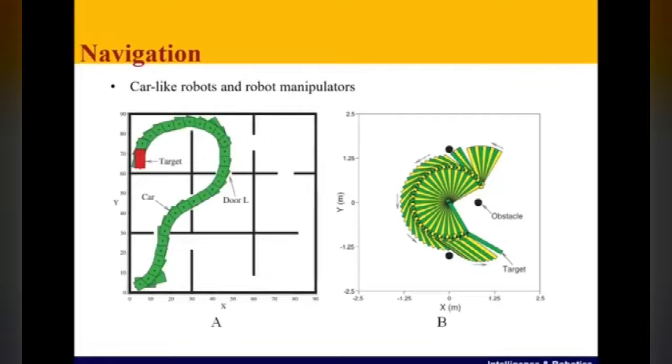Owing to the real-time performance and computational efficiency, the bio-inspired neural network path planning has been developed for various robot systems, such as car-like robots and robot manipulators.